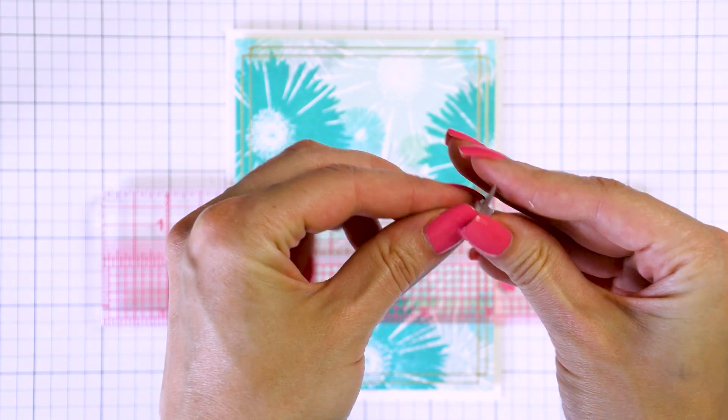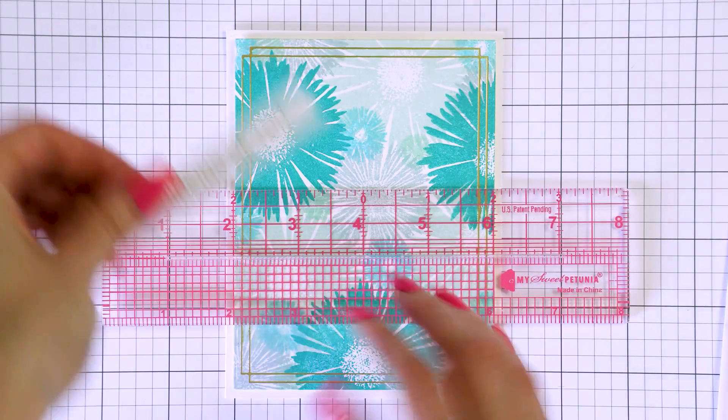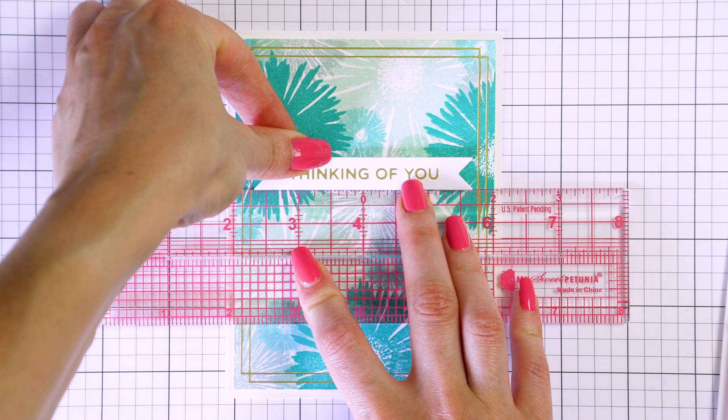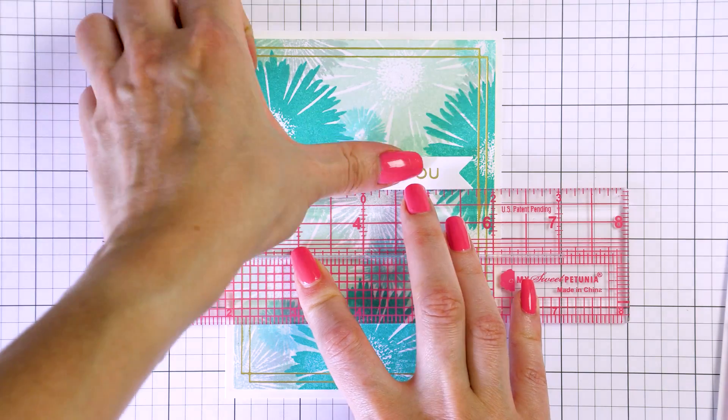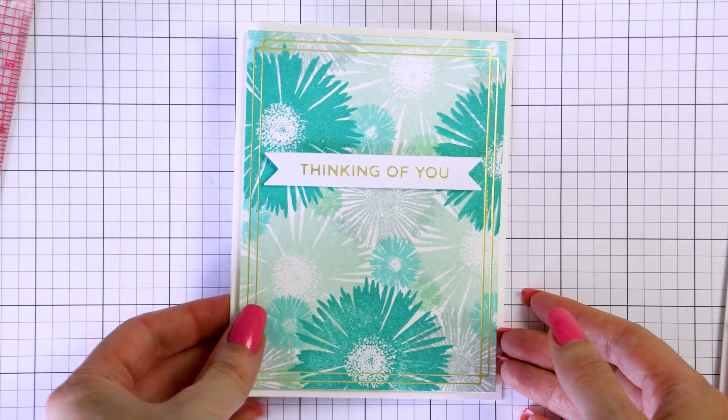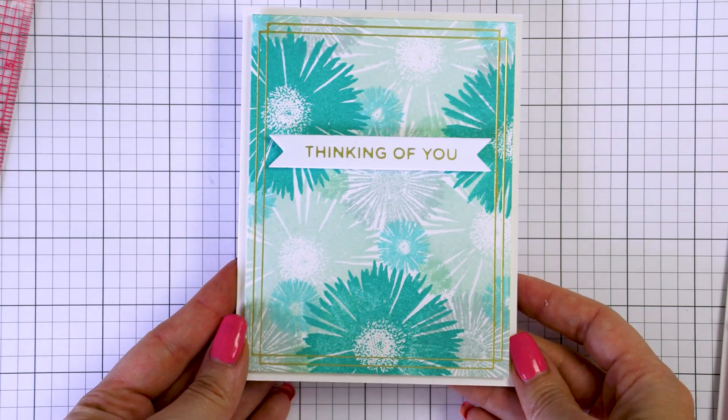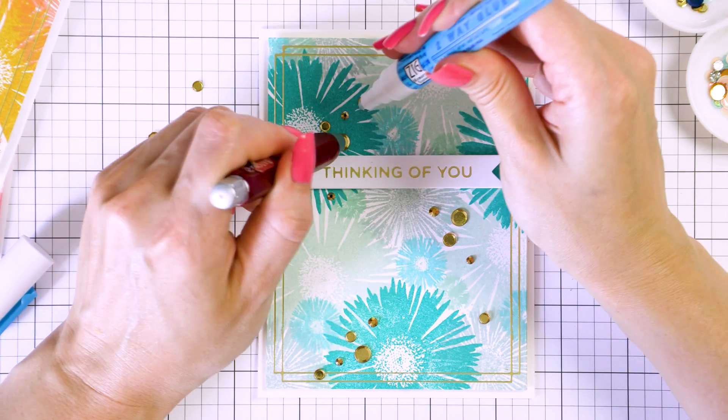With all the components ready, we can assemble our cards. I have already adhered the panels onto A2 white card bases. I used fun foam when adhering the panels to the card bases to add dimension to my cards. Next, I'm using a ruler and foam mounting the sentiments onto the panels. I can never place these things straight, so I always need to use a ruler to help me position sentiments.